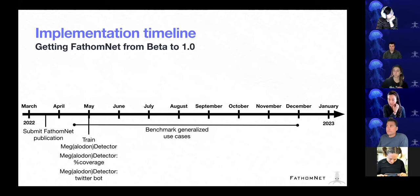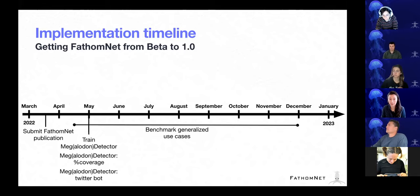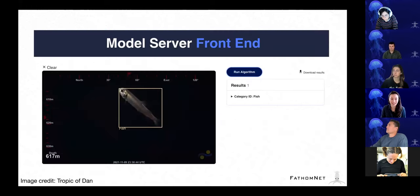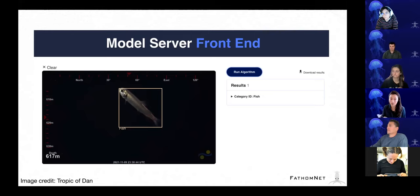Besides benchmarking, we're also going to be implementing the meg detector, and the idea is that we can use it to generate metrics like percent coverage. We can also potentially create a Twitter bot for engagement with the FathomNet dataset. This is the model server front end that Ben Woodward spun up at CVision AI — it's running the MBARI benthic super category object detector, and you can point the server to a particular image in your collection. It will output the localization as well as the class it thinks the object corresponds to.